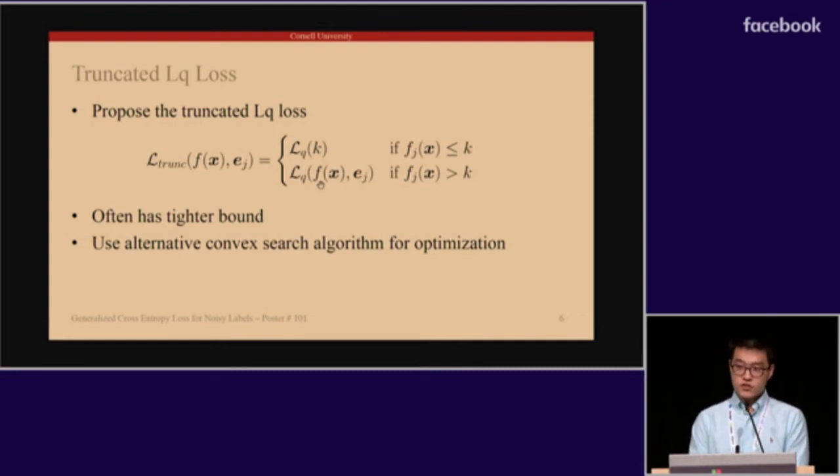Recall that loss functions with more bounded sum of losses lead to a more noise-robust loss function. Based on this observation, we also proposed the truncated L_q loss function, which leads to tighter bound and hence more noise robustness. The truncated L_q loss is essentially the normal L_q loss if the probability output is above a certain threshold k and a constant otherwise.